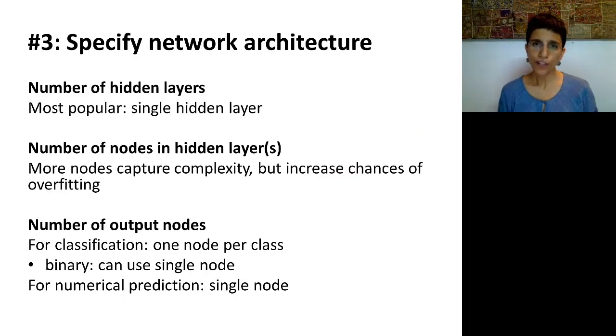Now that we've specified the first two steps, let's look at the network architecture. This is also something that the user will have to determine. We're going to have to determine, first of all, how many hidden layers we're going to have. Many software packages will only have a single hidden layer for computational reasons, but also practically, it turns out that a single hidden layer is usually sufficient. The more hidden layers we have, the more complex of a relationship that the network can capture. However, you also get the danger of overfitting.